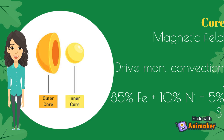Heat flow from the core also helps drive mantle convection too. I am now going to tell you the composition of the core. Back in 2017, researchers believe that the core consists of 85% iron, 10% nickel, and the remaining 5% is silicon.